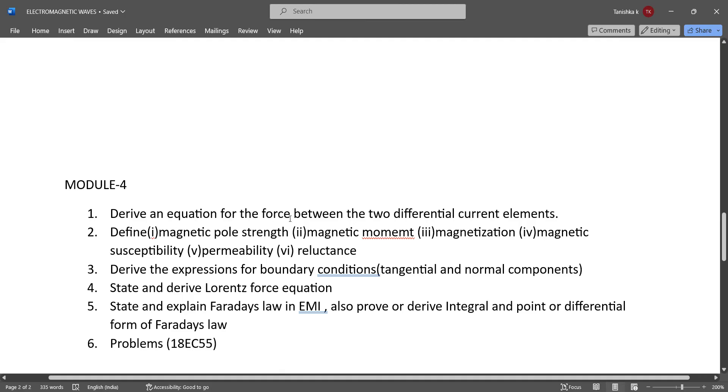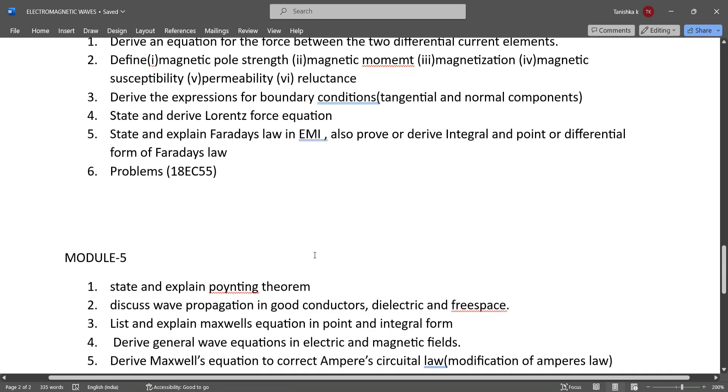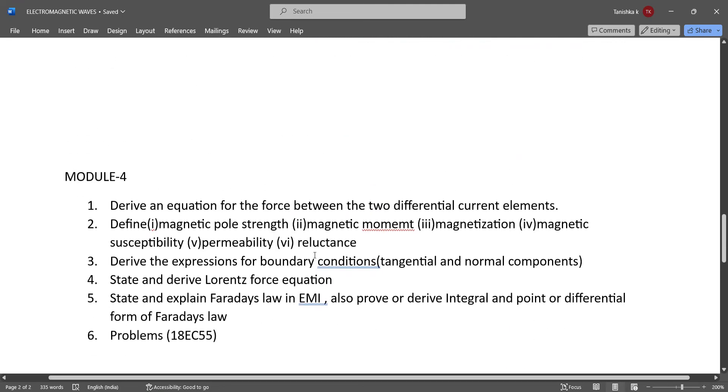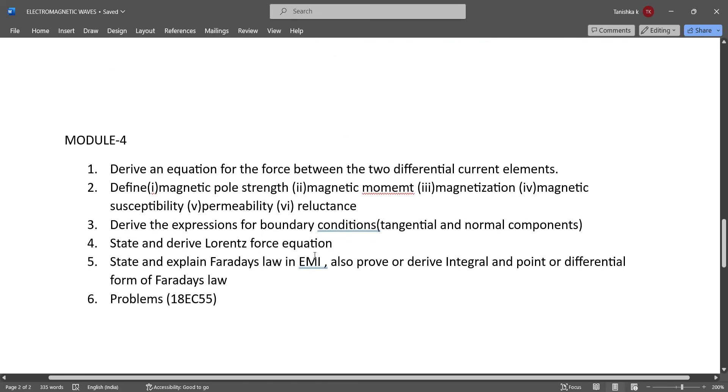Module 4 - all questions are important in module 4 and 5, that's why I have not highlighted them. Just study all the questions. Derive an equation for the force between two differential current elements. Define magnetic field strength, magnetic moment, magnetization, magnetic susceptibility, permeability, and reluctance.